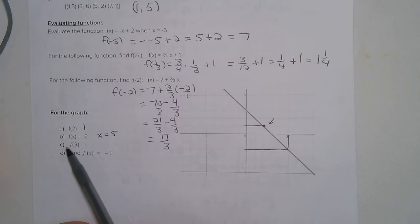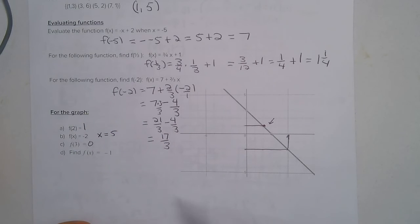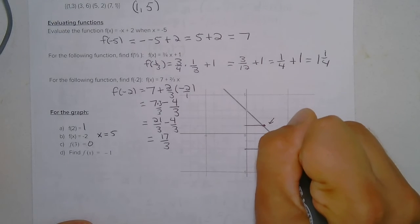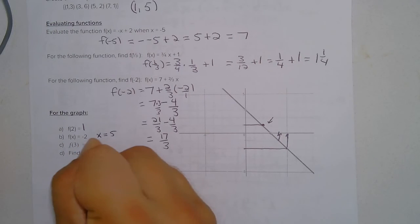Then here we have to find f of 3. And if I plug in 3 for x, I get out 0 for y. Then here, f of x equals negative 1. So here you have negative 1. Then go up there. And that, the x value is 4.